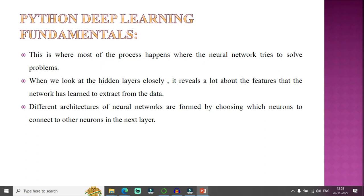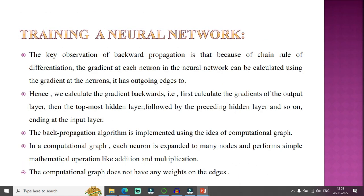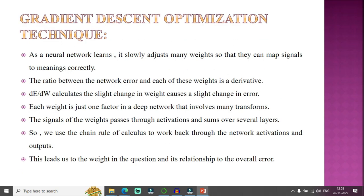The hidden layers are where most of the processing happens — where the neural network tries to solve problems. Looking at the hidden layers reveals a lot about the features the network has learned to extract from the data. A hidden layer contains nodes arranged in a topographically sorted array with edges. Different architectures of neural networks are formed by choosing which neurons to connect to neurons in the next layer.